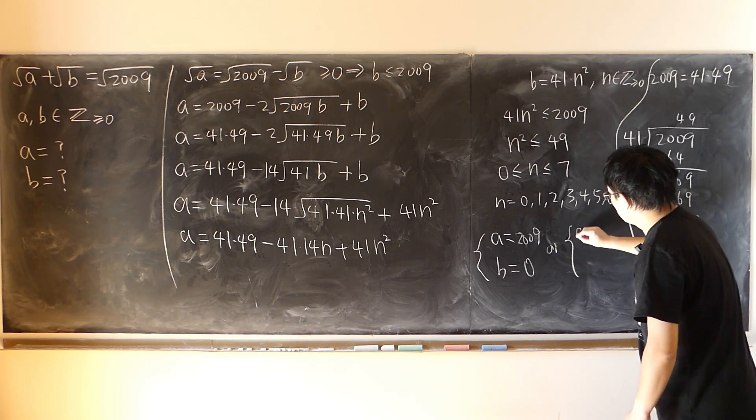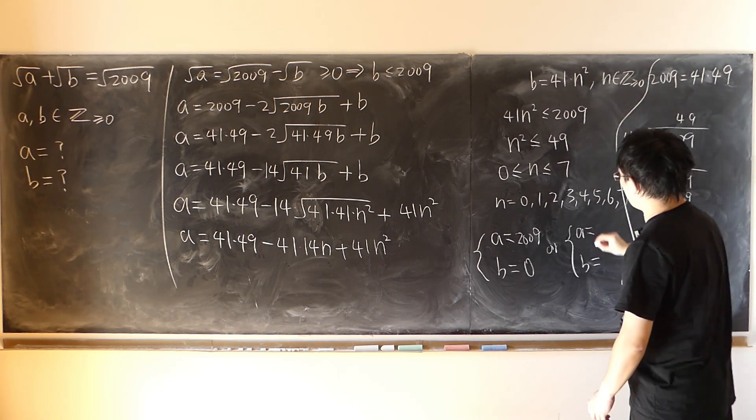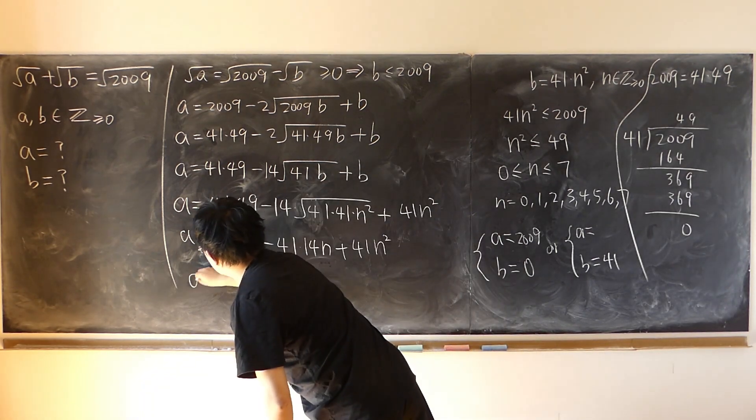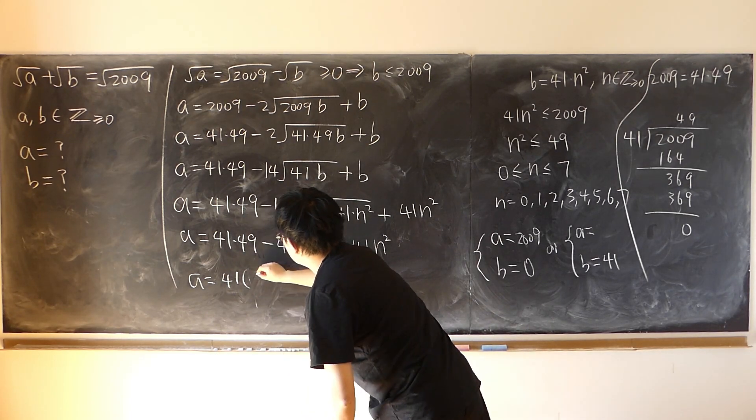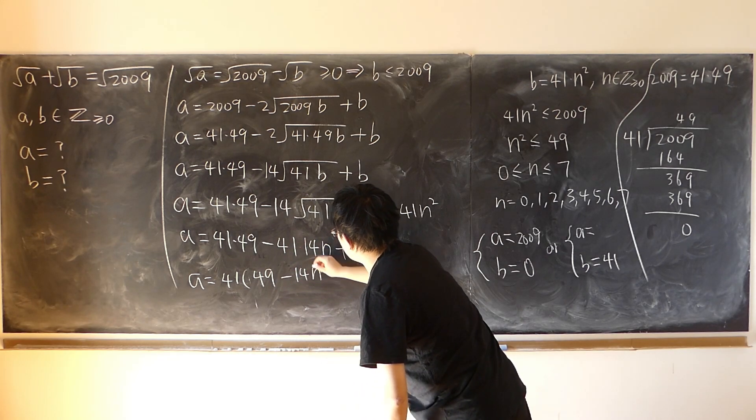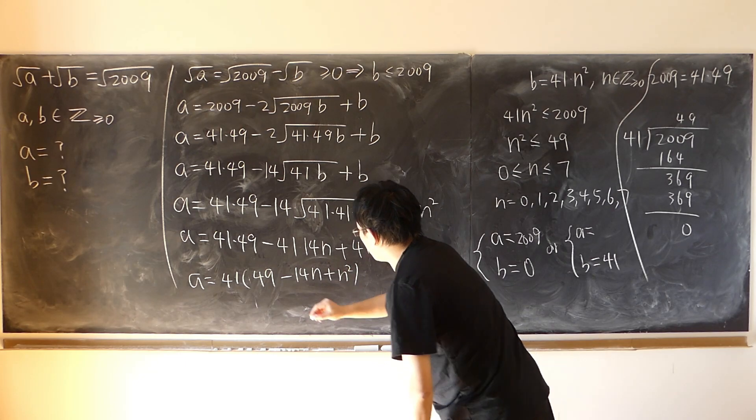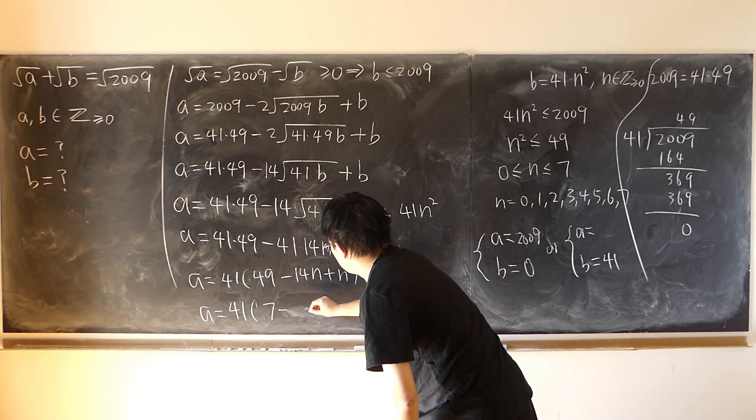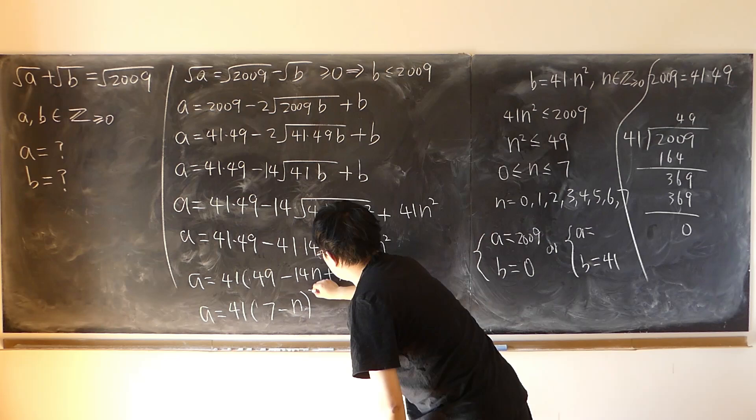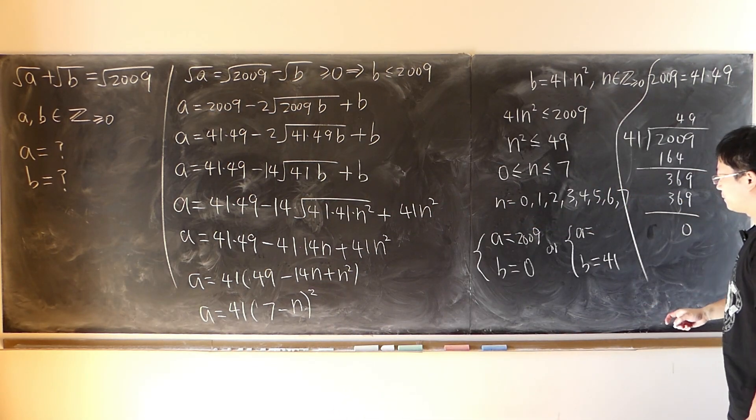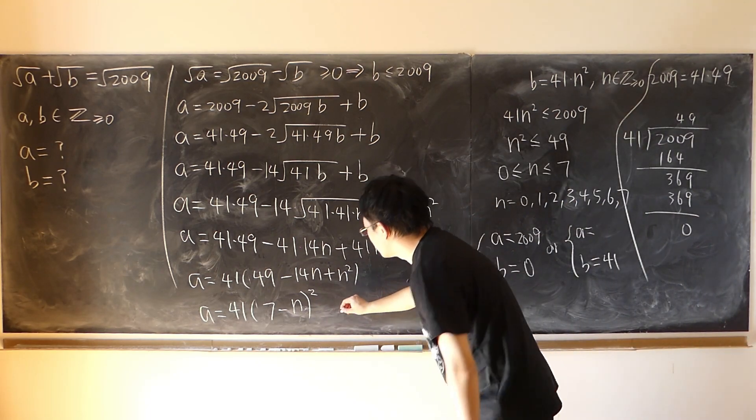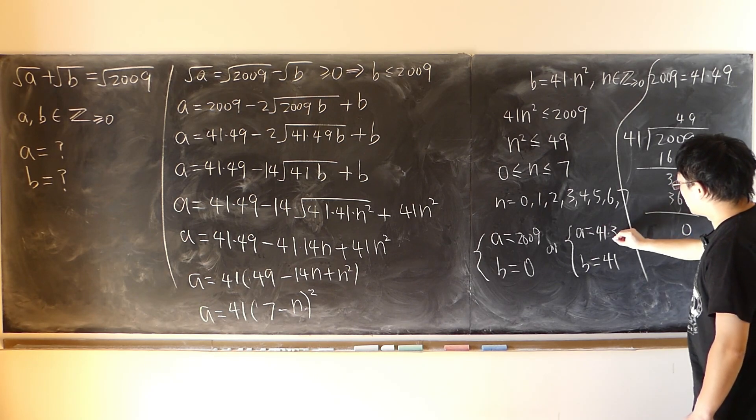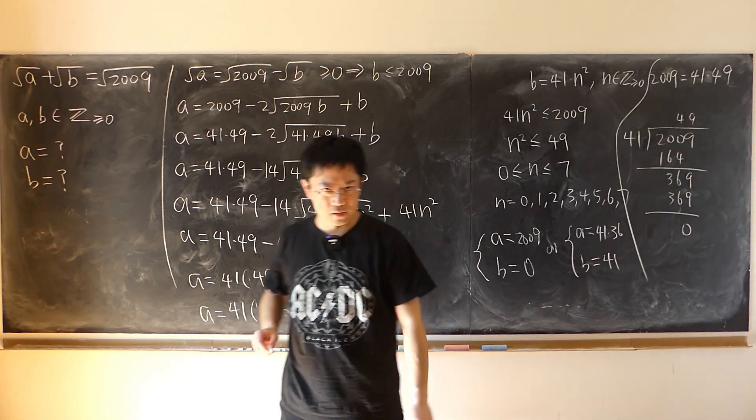Second solution, n is equal to 1, b is equal to 41. At the same time, a is equal to, let's factor out 41, 49 minus 14n plus n square. And a is equal to 41 times 7 minus n quantity square. So when n is equal to 1, in this case, 36. Six square, 36, 41 times 36. So on and so forth. I just skip all the remaining of the steps. Just a simple calculation.